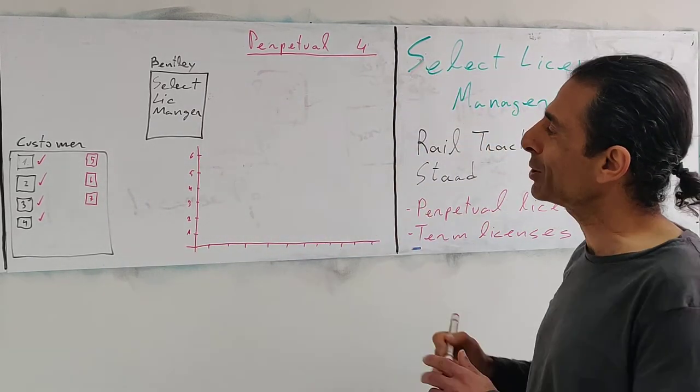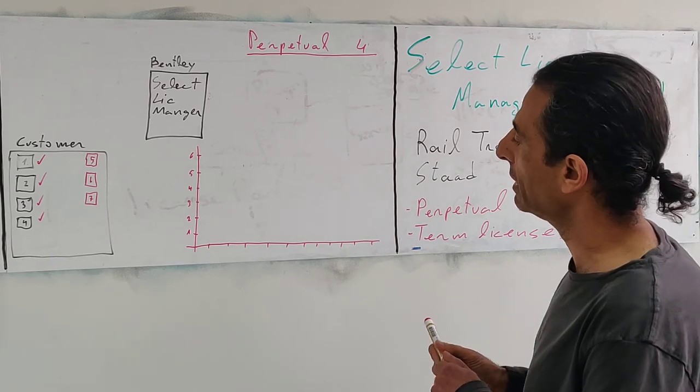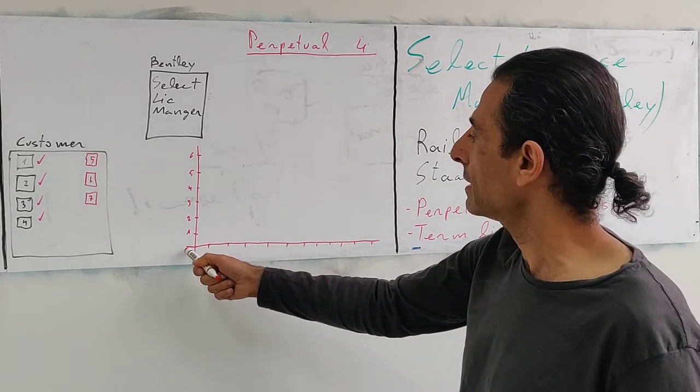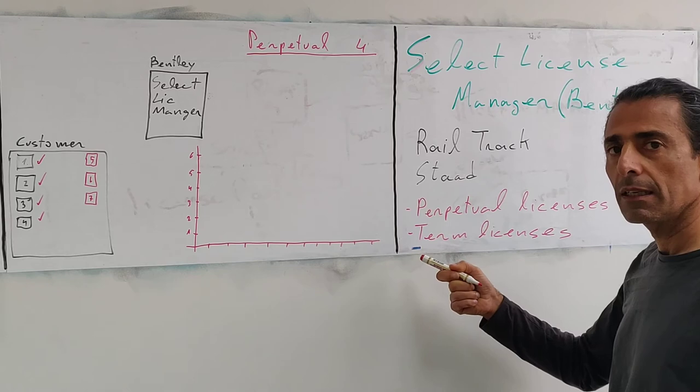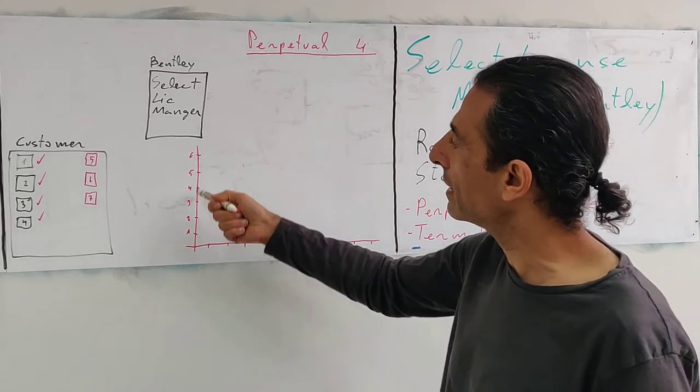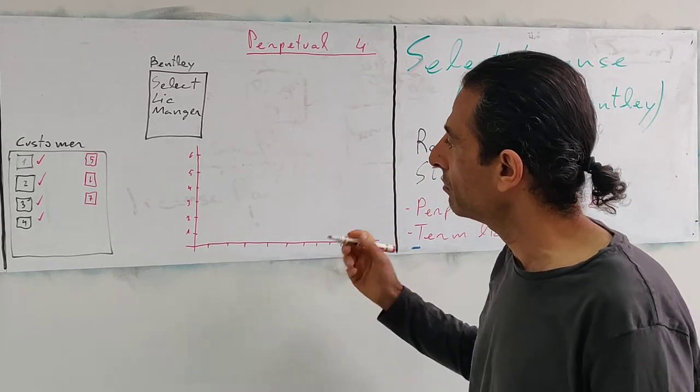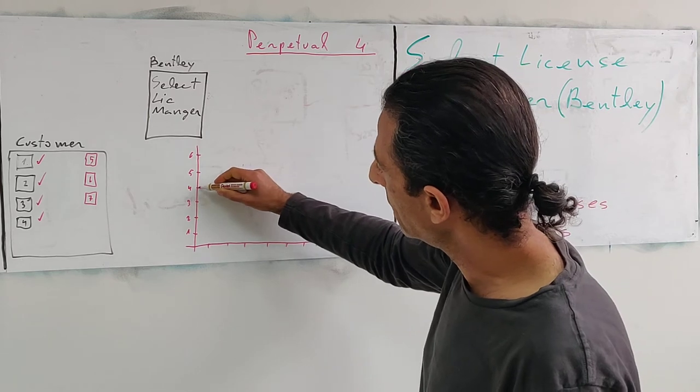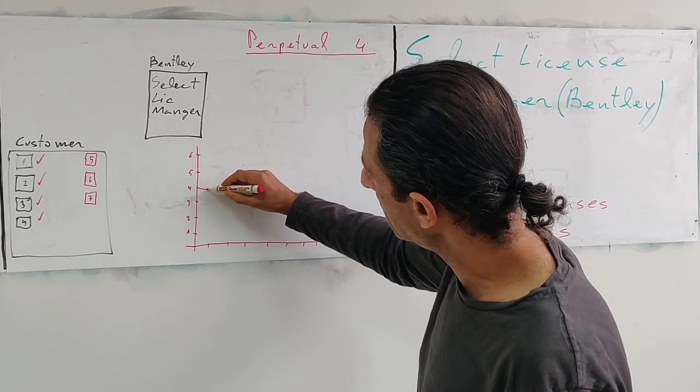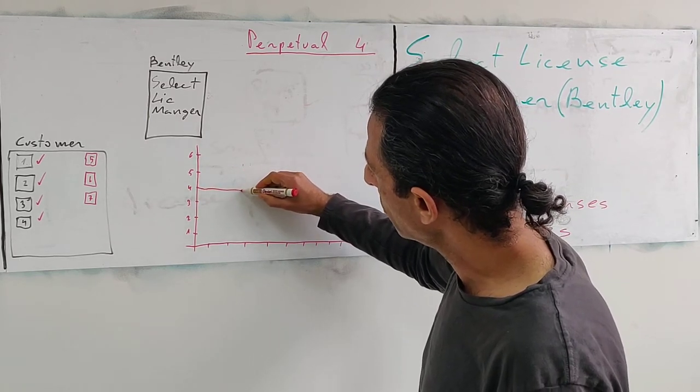So let me show it on the chart. Let's say this axis represents days and here we see the license usage. So let's say that typically we are using four licenses and then there is a peak usage.